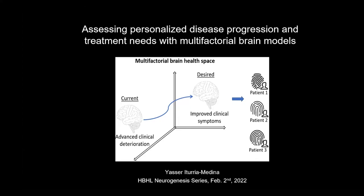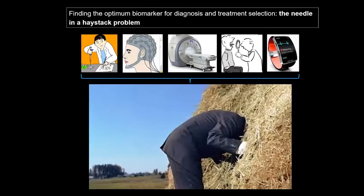All of us related to HBHL are in some way related to the identification of better diagnostic tools and treatments for neurological disorders. We all know the critical importance that biomarkers have for this. However, in the last decade, we have seen the number of available biomarkers grow to millions, with new data coming from molecular technologies, electrophysiology, neuroimaging, clinical data, and new digital devices. The number of available biomarkers has increased exponentially, and this represents a new challenge.